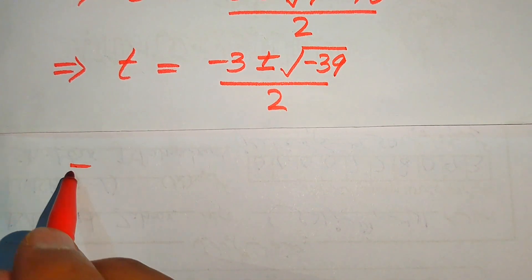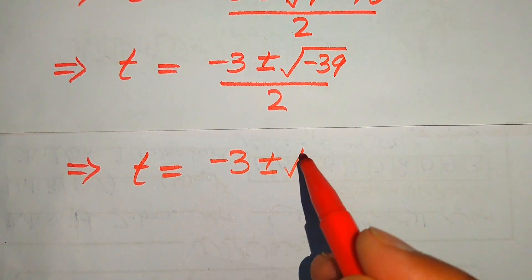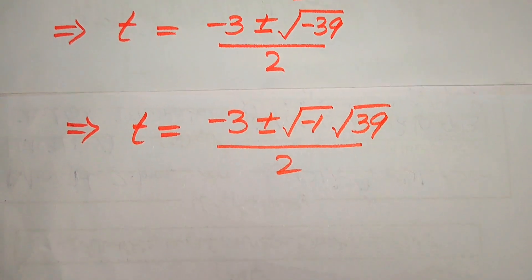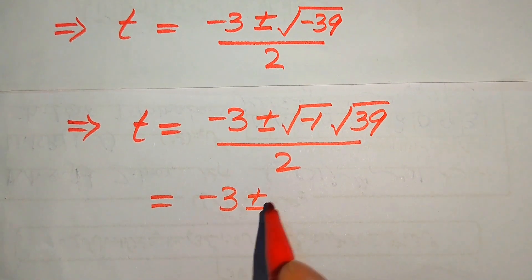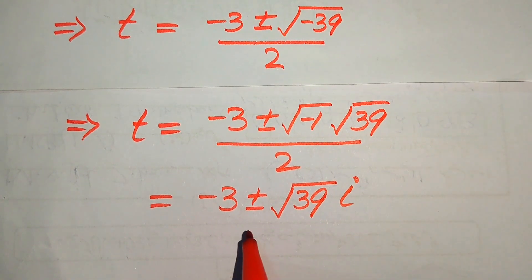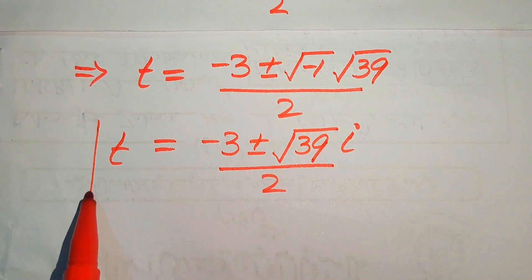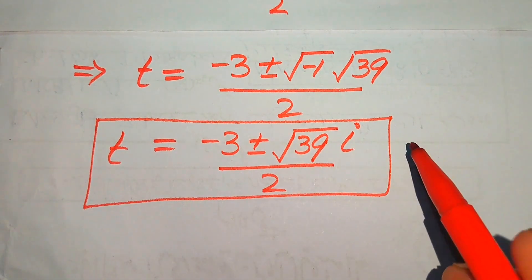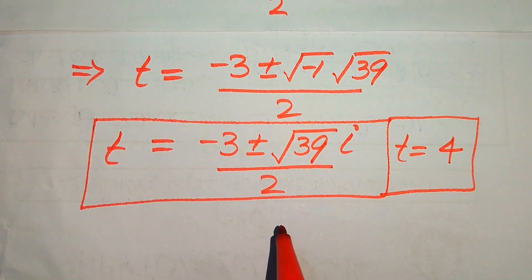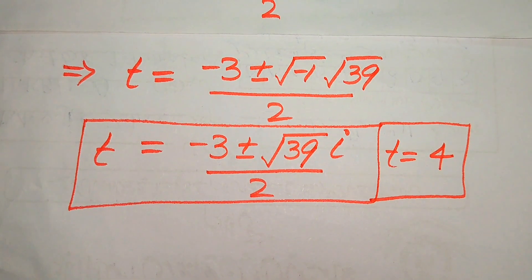We simplify further: square root of minus 39 is written as square root of minus 1 times square root of 39, and since square root of minus 1 equals iota, we get t equals (minus 3 plus or minus iota times square root of 39) divided by 2. These are the two complex roots of the given equation. Finally, the three roots are: one real root t equals 4, and two complex roots. Thank you for watching this video; please subscribe to my channel for more videos.